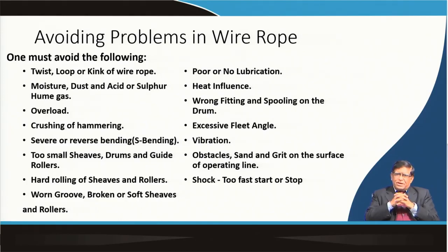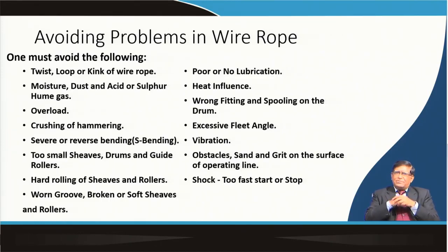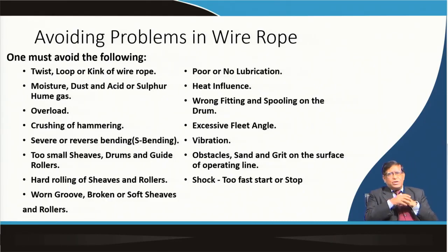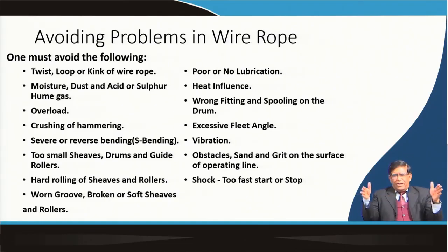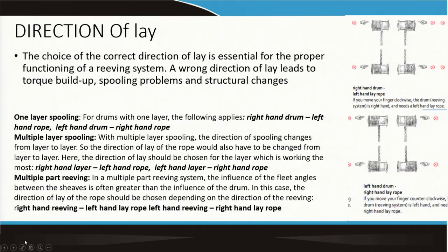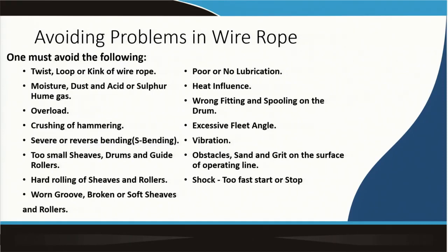You should also avoid heat influence. Between the sheave and the wire rope there is friction which generates heat, and the lubricant carries away that heat. You should ensure no heat generation occurs along the path of the wire rope, as it would damage the rope. Similarly, proper fitting of grooves is important — when the wire rope moves on a drum and then over a sheave, the location of the drum and sheave and the groove geometry must be properly matched.